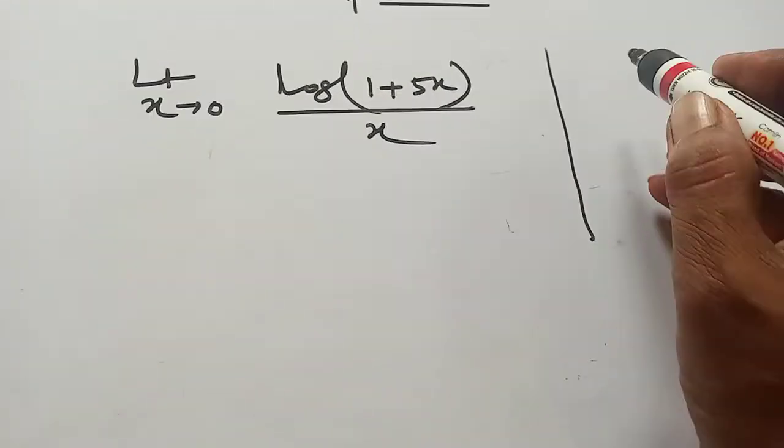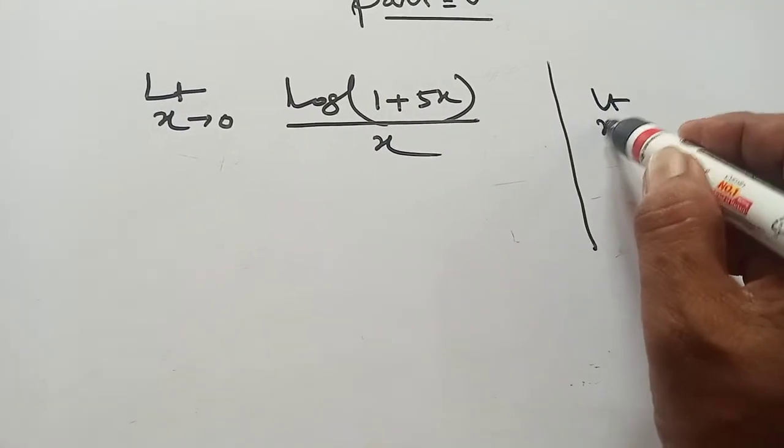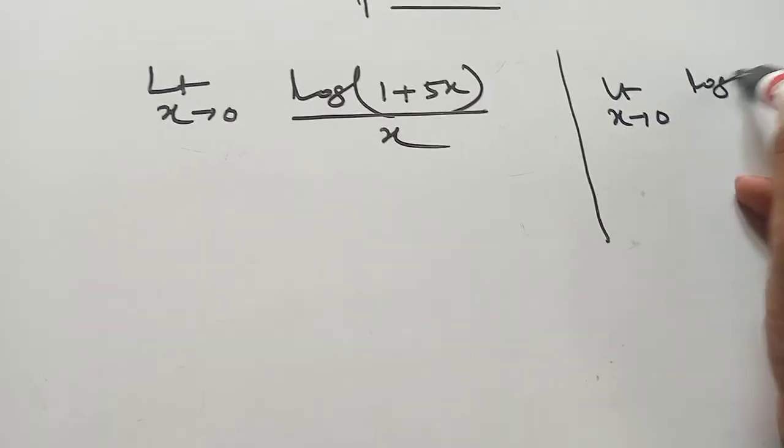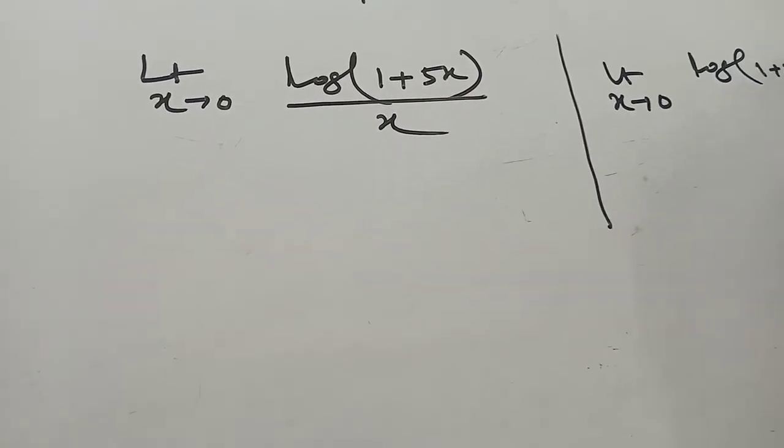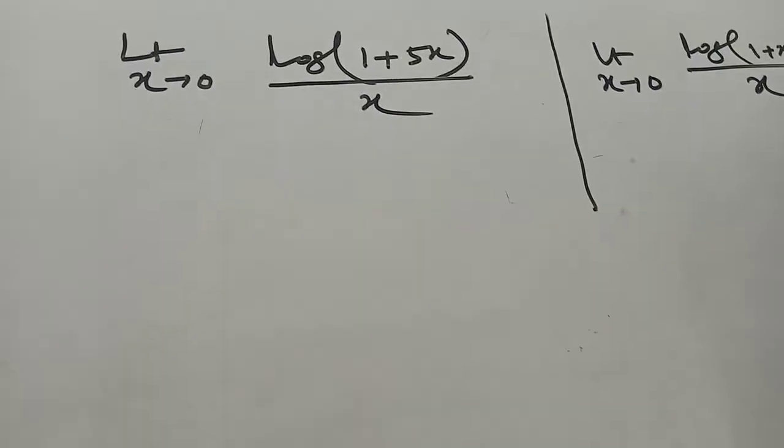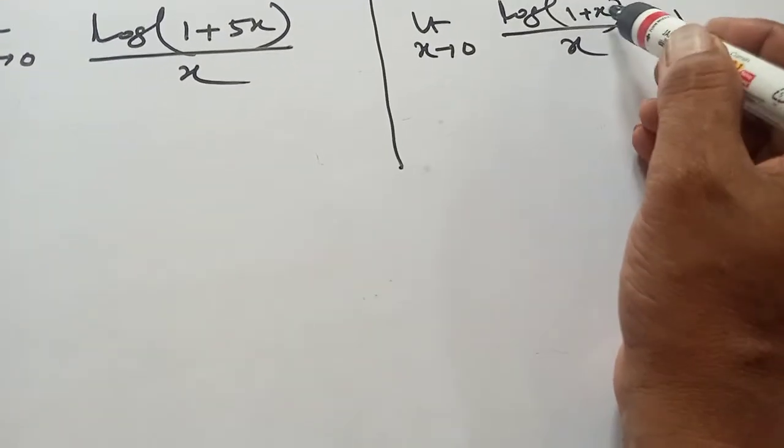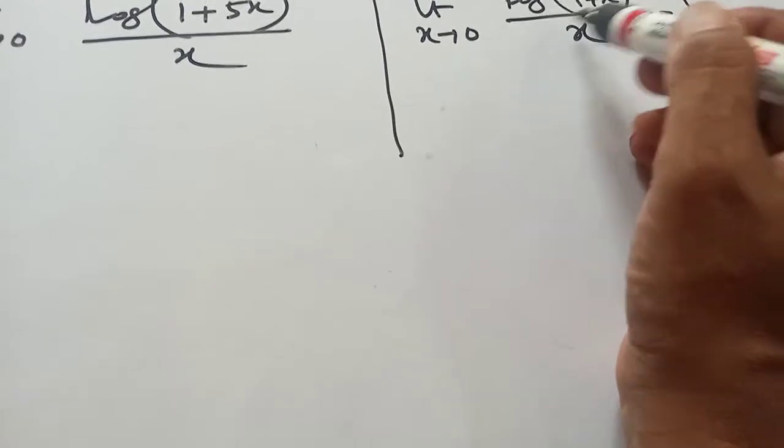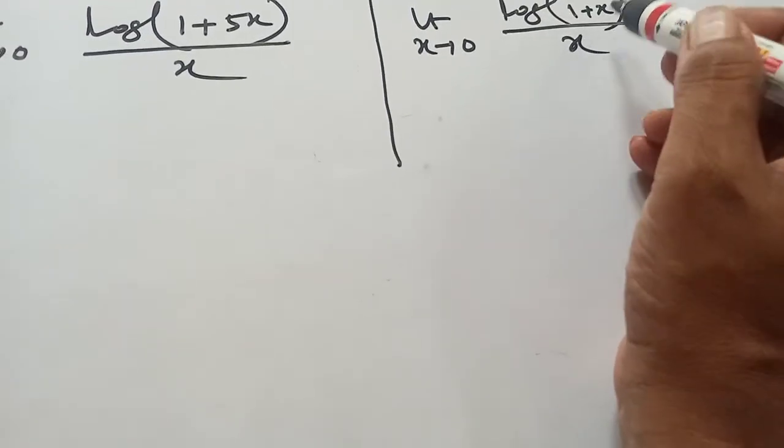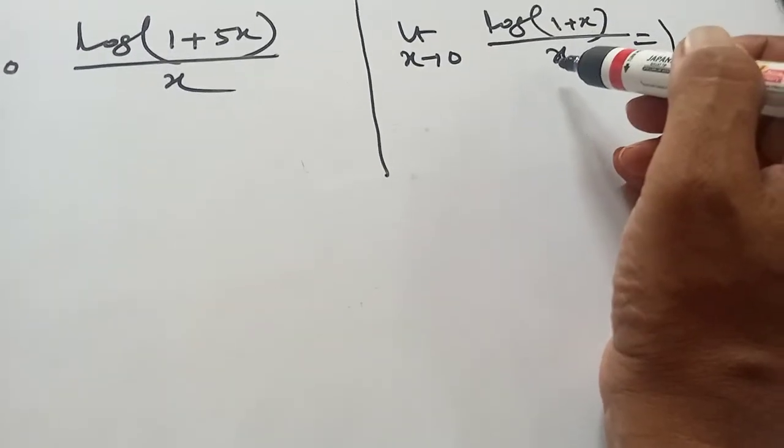For log, there is one formula: limit as x tends to 0 of log(1 plus x) by x equals 1. That means here is x, then here is also x. This part and this part will be the same.